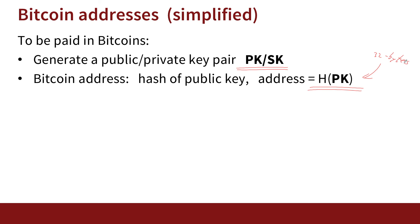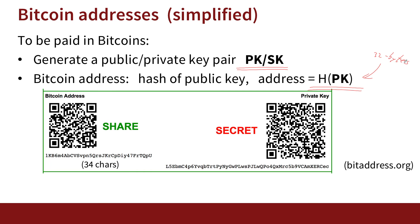A hash function allows us to take arbitrary data and compress it into 32 bytes. Here we take the public key and generate a hash value from it — that's our address. You can easily do this on your own machine at bitaddress.org, a Bitcoin public-private key generator that runs in your browser. It generates the secret key and the public key. The secret key you keep for yourself — you can print it out and store it safely. The public key you give to the rest of the world so they can send you funds.